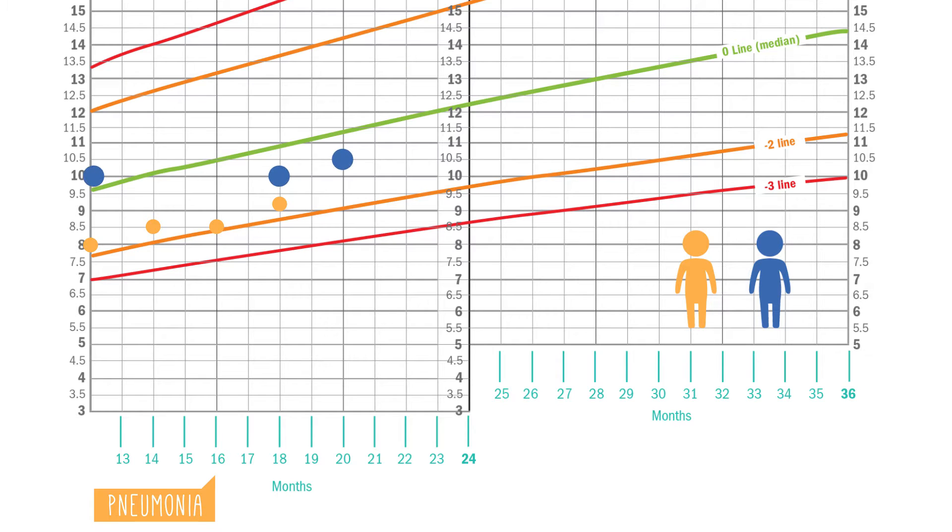So even though the blue child is higher up on the growth curve than the orange child at 18 months, his pattern of growth is much more concerning because our orange friend is tracking nicely along a steady growth curve while the blue child is falling off his ideal curve.